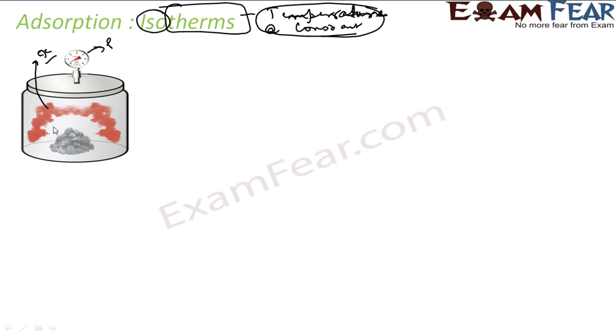We want to see how much gas or any liquid is getting adsorbed on an adsorbent. So we'll change the pressure and we'll just keep temperature constant. So in this case we'll see a scenario where my adsorbate is gas. You see there's a gas. This is my adsorbate and this is my adsorbent charcoal.